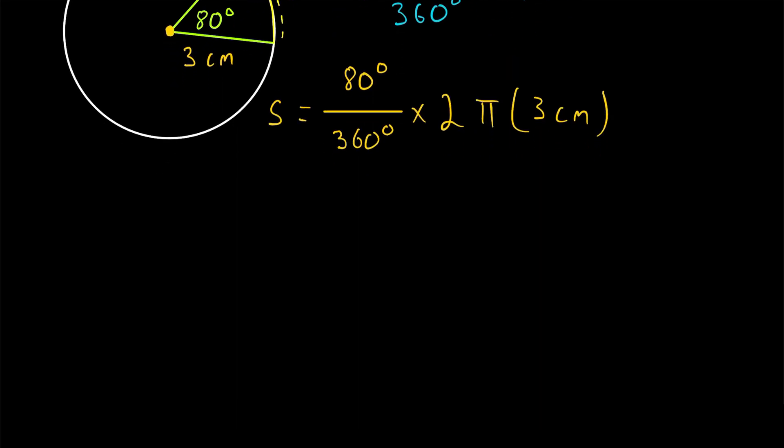So let's do some simplification. With 80 degrees over 360 degrees, we can cancel out the degrees unit, and we can cancel out a factor of 10. That will leave us with 8 over 36. And then, simplifying this further, 8 and 36 both have a factor of 4. 8 is equal to 2 times 4, and 36 is equal to 9 times 4.